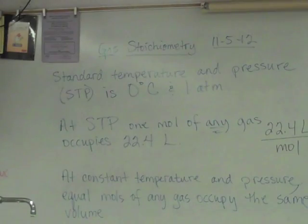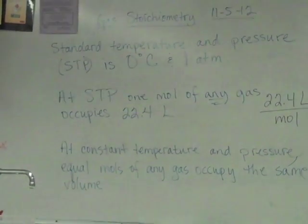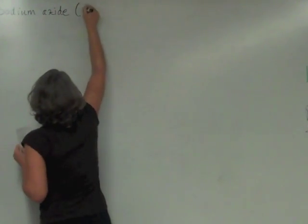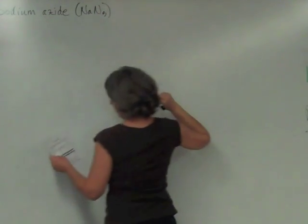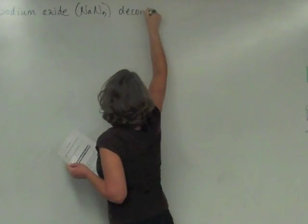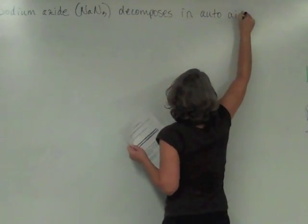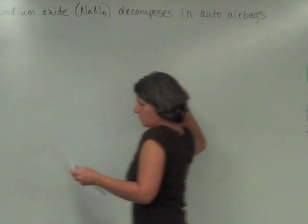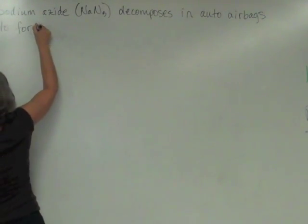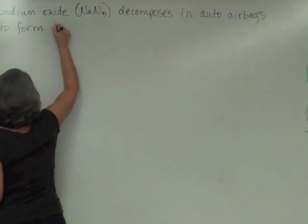Let's do some stoichiometry with gases now. So we're just going to fine tune our stoichiometry. So let's write down a problem. Sodium azide, NaN3, decomposes in auto airbags.